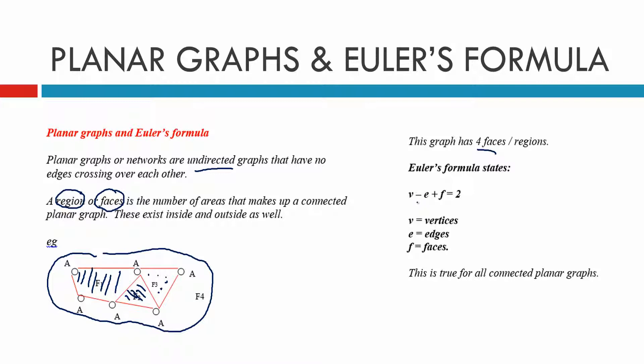Euler's formula states that the number of vertices minus the number of edges plus the number of faces equals 2. Now this is true for all connected planar graphs. So if they ask us is it a connected planar graph, we can use Euler's formula to work out whether it is or not.